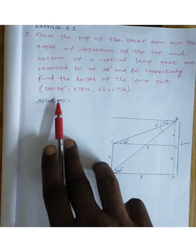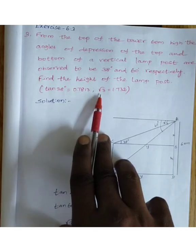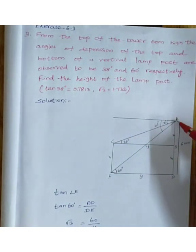Find the height of the lamp post. Given that tan 38 degrees is 0.7813 and the value of root 3 is 1.732.